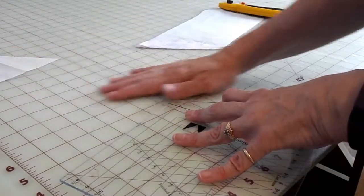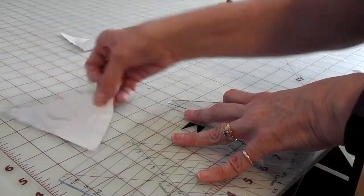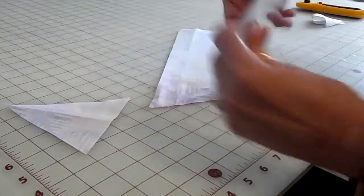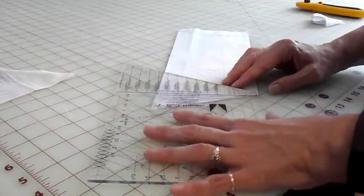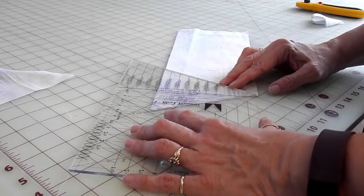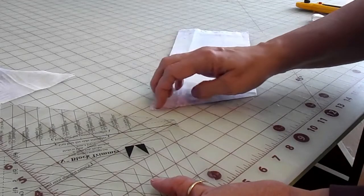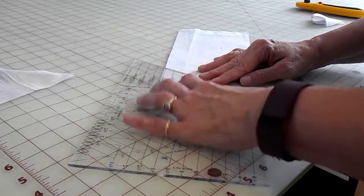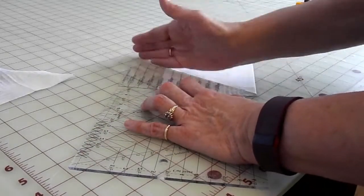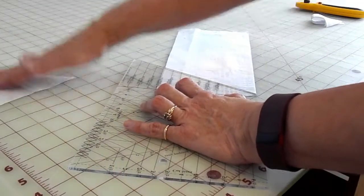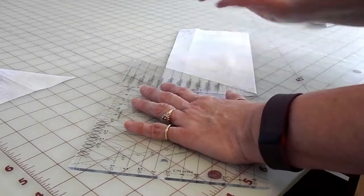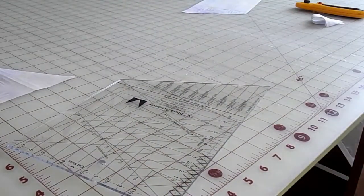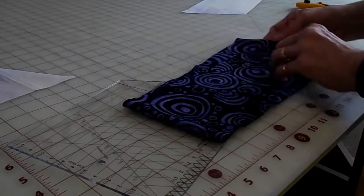When I make my first cut and pull this away, you will see that we've made two center triangles. When you do the rest of your triangles, take the ruler and turn it upside down and line up the center triangle trim line. Make your next cut, and you want to make sixteen center triangles for the blocks.